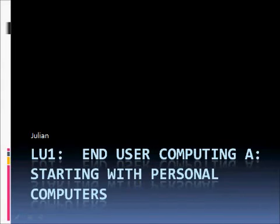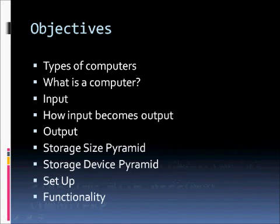Welcome to Learning Unit 1 of End User Computing A. We're starting with Personal Computers and I'm Julian. In this learning unit we're going to be talking about the following things: types of computers, what is a computer, how we get input into the computer, how input gets translated to output, what output is, the two kinds of storage that we can have, the permanent storage itself, and storage devices. We're also going to talk about how to set up the computer and basic functionality of the computer.